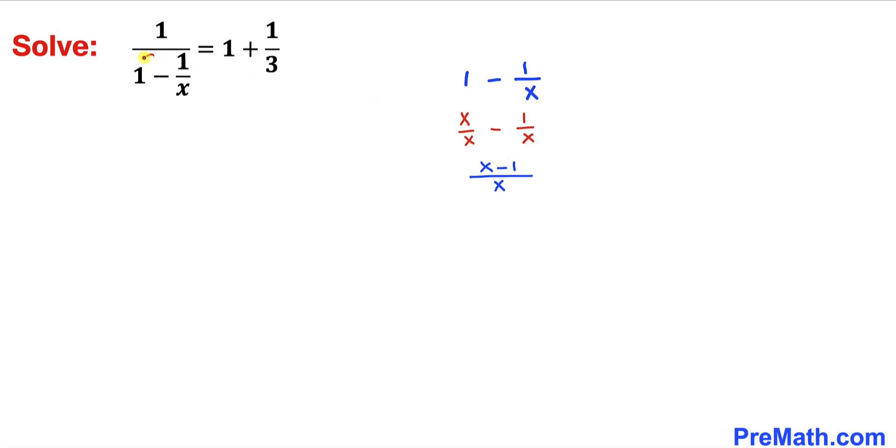So our denominator has been simplified. Now let's focus on the right hand side of this equation: 1 plus 1 divided by 3. Let's go ahead and manipulate 1. 1 could be written as 3 divided by 3, and then 1 divided by 3.